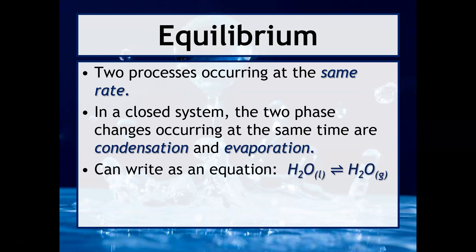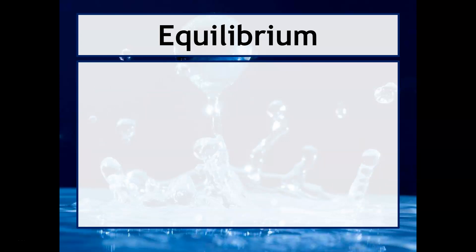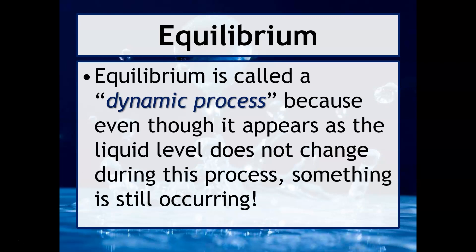We can write this as an equation where you have water on the left and water on the right, with a double-headed arrow representing that this is an equilibrium. Equilibrium is referred to as a dynamic process because macroscopically it appears that nothing is happening, but at the particulate level there is actually a lot going on — evaporation and condensation are occurring at the same rate.